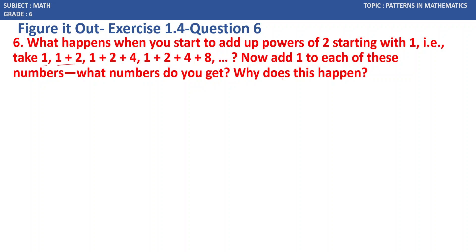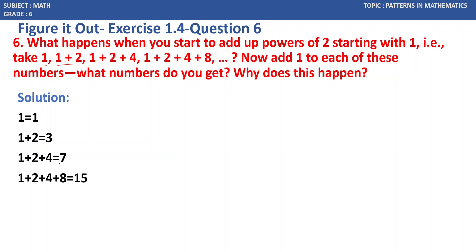Why does this happen? Let us see. The first sum is 1. The second is 1 plus 2, which equals 3. The third is 1 plus 2 plus 4, which equals 7. The fourth is 1 plus 2 plus 4 plus 8, which equals 15. So the series is 1, 3, 7, 15.